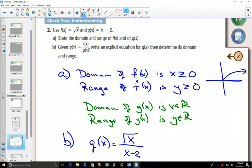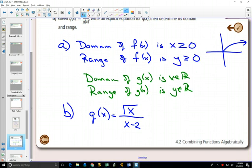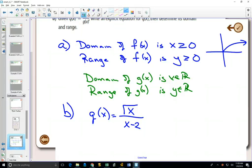Now, for the domain, you know that the domain is going to be the overlap. So the overlap between the two domains means that it has to be bigger than or equal to 0, plus, do we have any non-permissible values? x cannot equal 2. So x has to be bigger than or equal to 0, and x cannot equal 2.